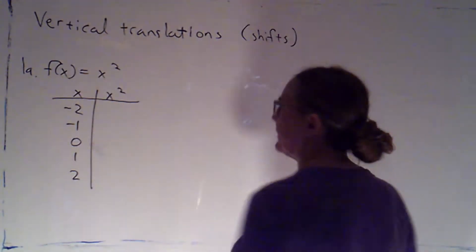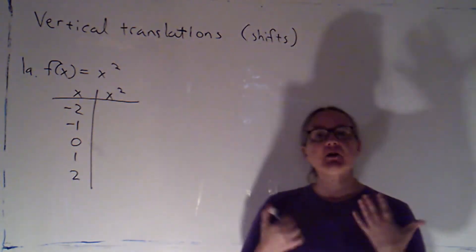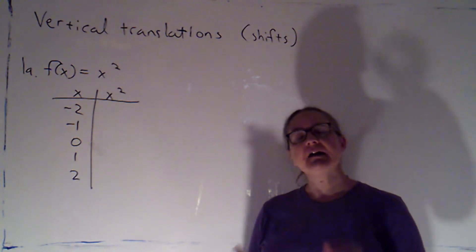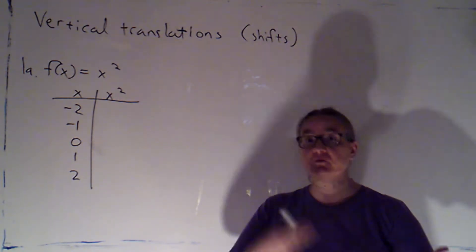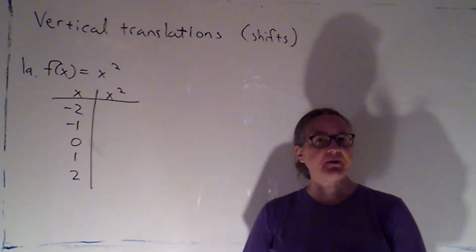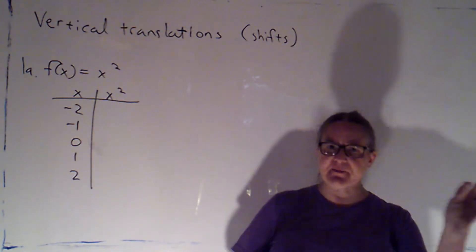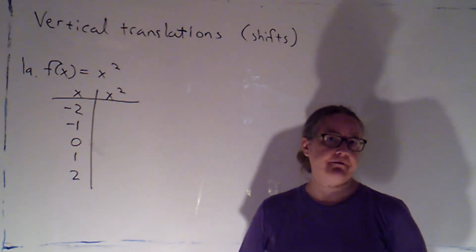Now that we're familiar with our parent functions, we're ready to do section 1.6, which is transformations of graphs. That's when we have a graph that we're familiar with, a function whose graph we know, and then we take the formula for that function and modify it a little bit algebraically.